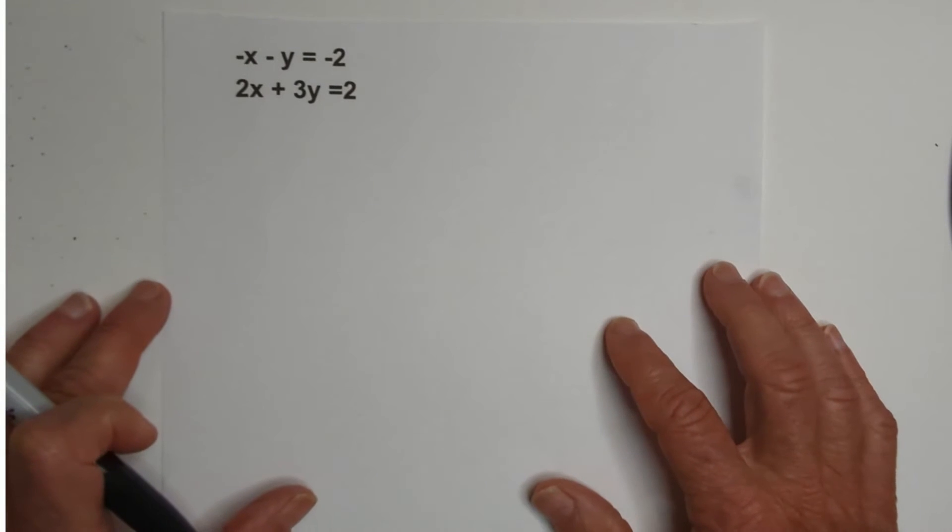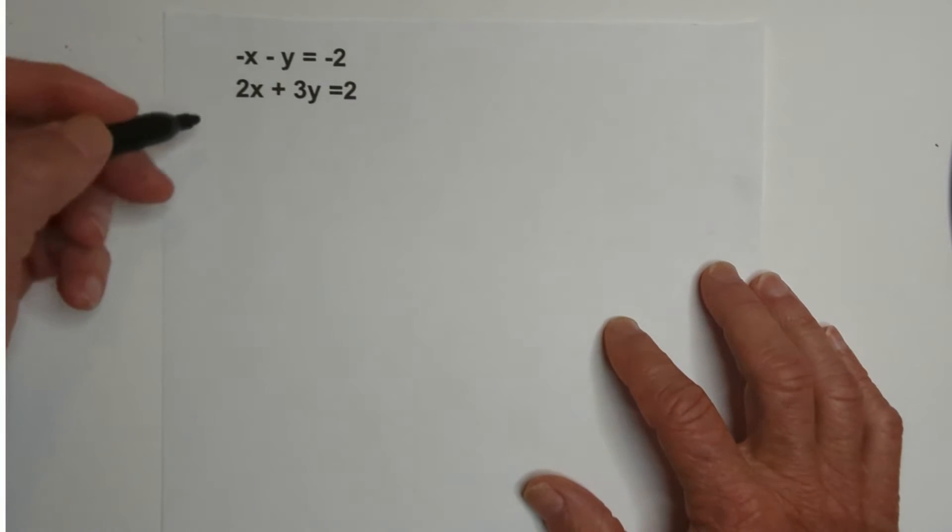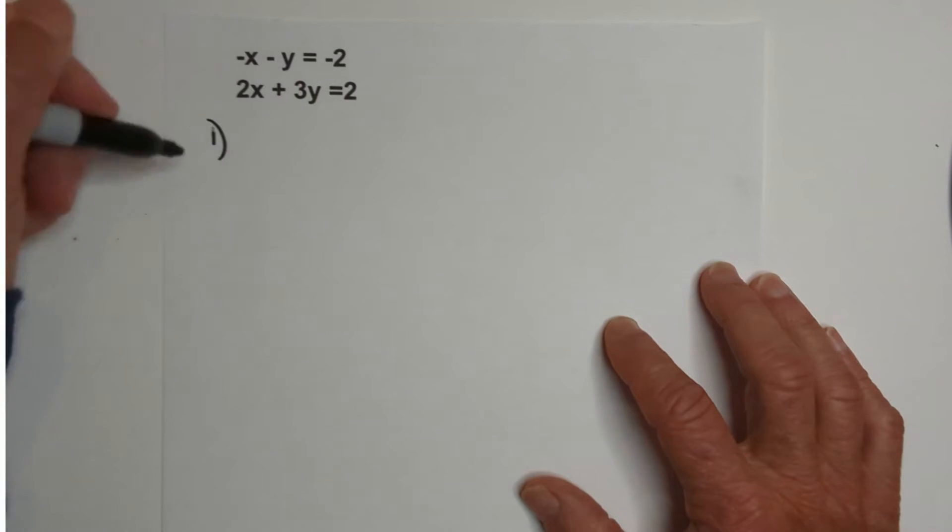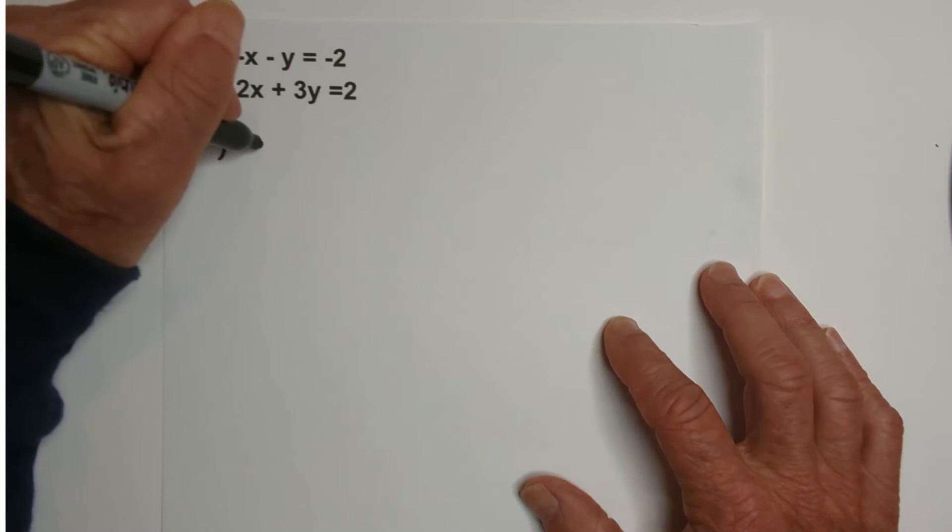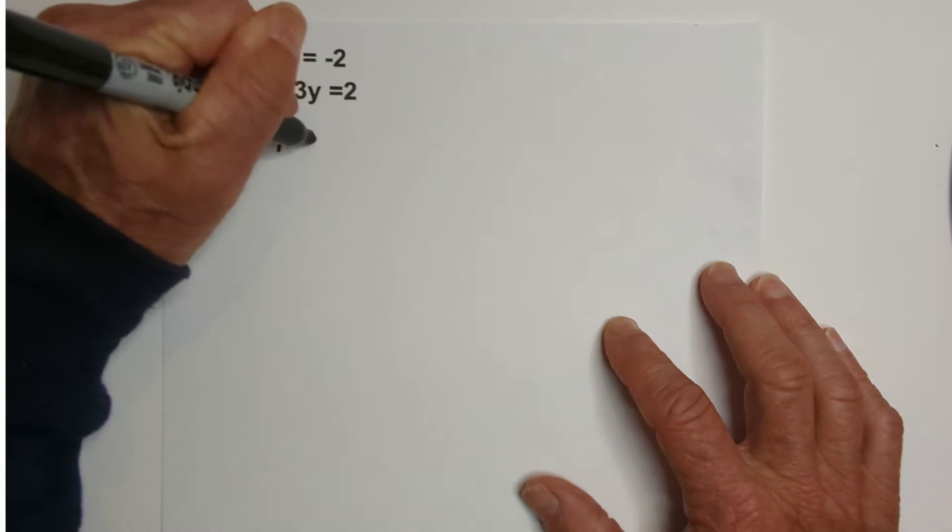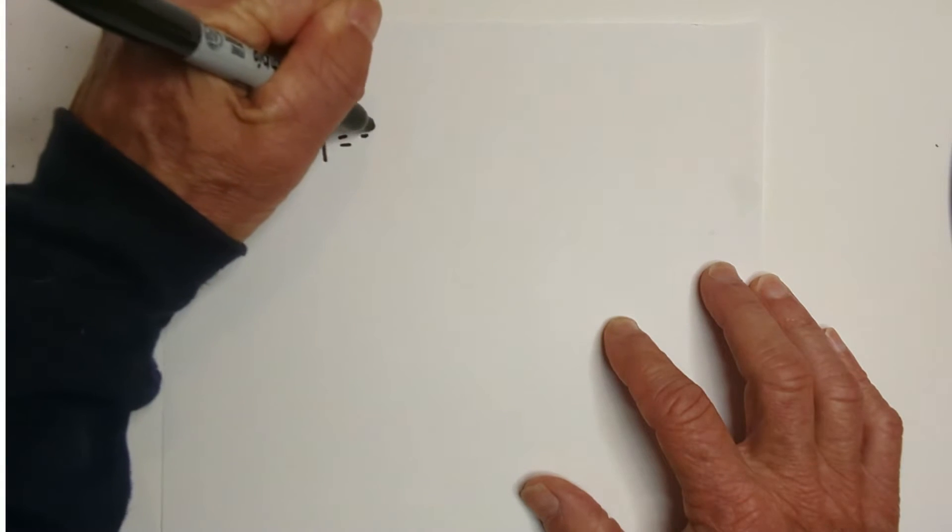So, I'm going to first rewrite one of the equations. So, I'll write a 1 here for step 1. So, why don't we rewrite this equation here because it looks fairly simple. So, I've got -x - y = -2.